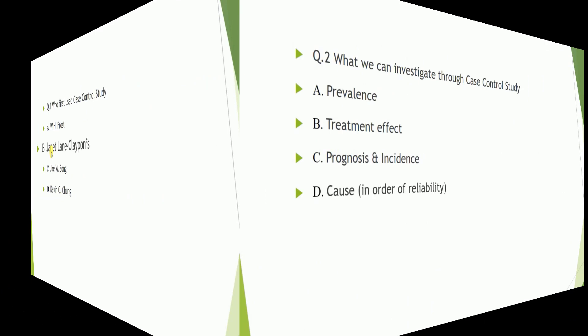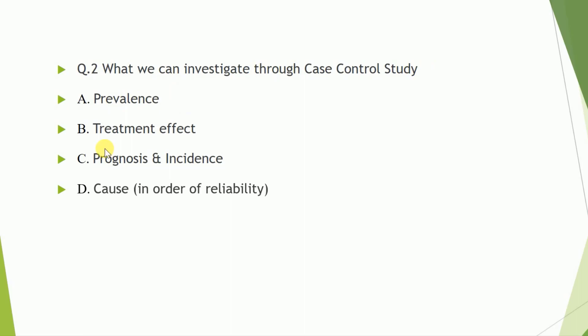Question number two: What can we investigate through case control study? A. Prevalence. B. Treatment effect. C. Prognosis and incidence. D. Cause in order of reliability.